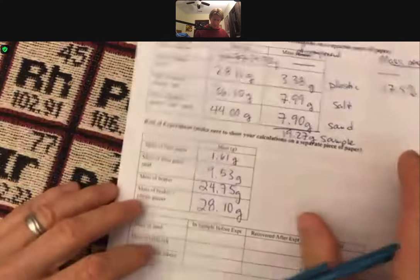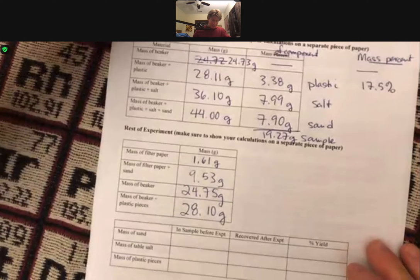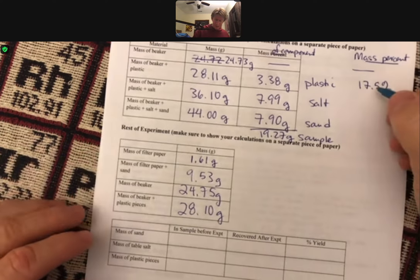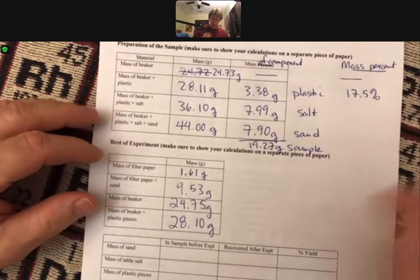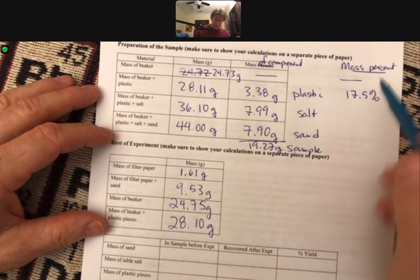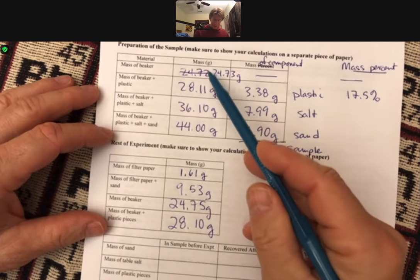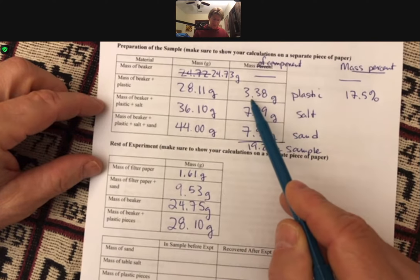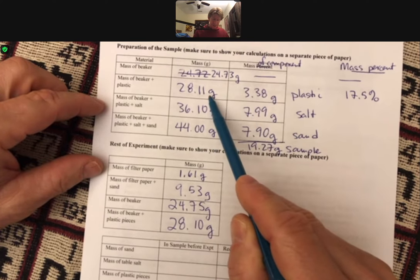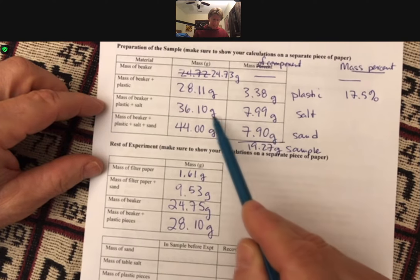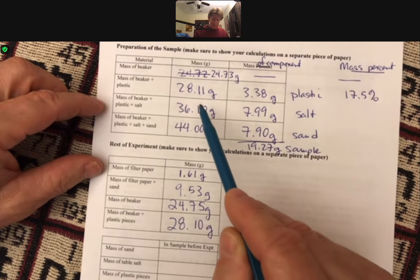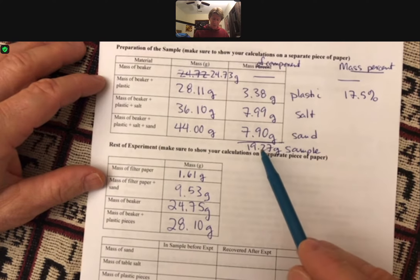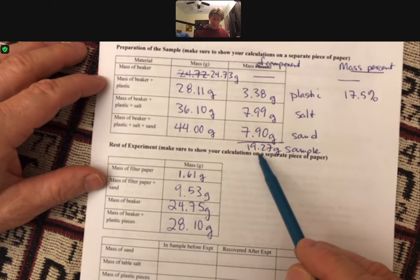And so now my table is complete here. Let's see some things. Let's just talk about all the calculations in this video. So the mass percent of each of these. This is the mass of the beaker, beaker plus plastic, etc. Then I isolated each of these. So 3.38 grams is the 28.11 minus the beaker. Then here minus this gives me the salt. Here minus this gives me the sand.